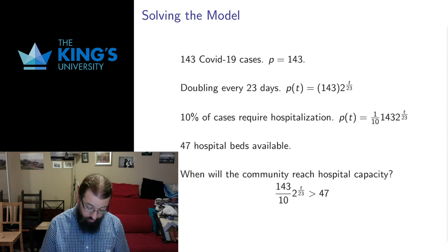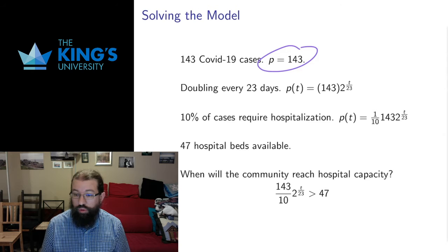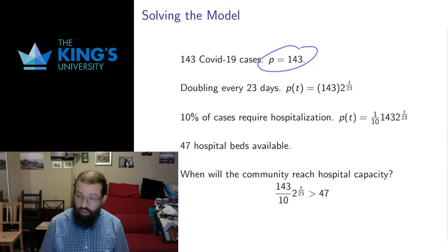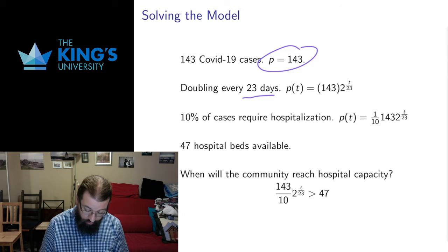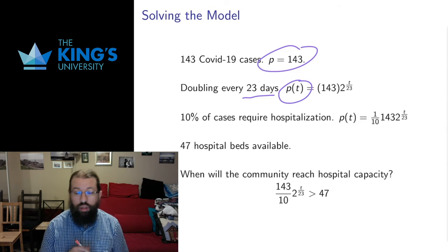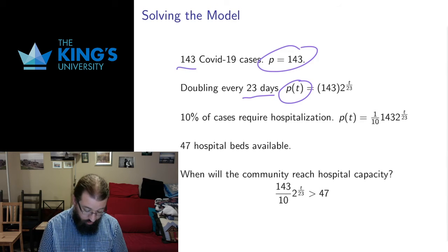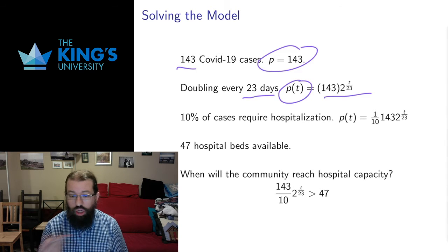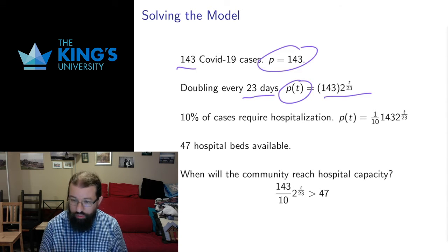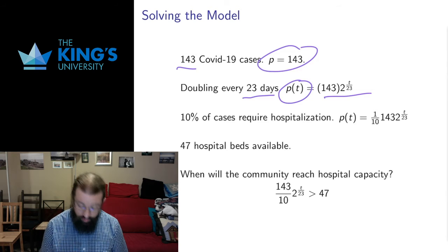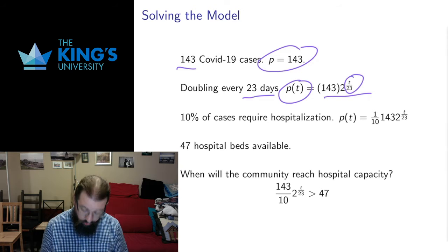Let's start with the number of cases. I'm going to call that P. We have 143 cases — that's where we start, that's a constant. It doubles every 23 days, so now instead of P being a constant, I'm going to think of P as a function of time. I have a variable T — T is the number of days since this particular date when I had 143 cases. Doubling every 23 days gives us an exponential function: 2 to the T over 23. I'm not going to get into the details of how this works — you can look at the exponential chapter for that.